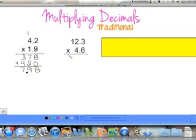Alright, we're going to try a new problem. 12.3 times 4.6. And again, we're just going to multiply like normal. Ignore the decimals until the very end. So 6 times 3 is 18. 6 times 2 is 12, plus 1 is 13.